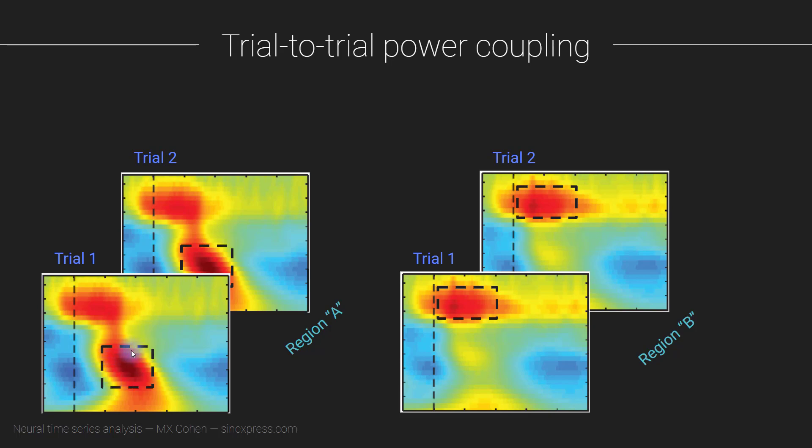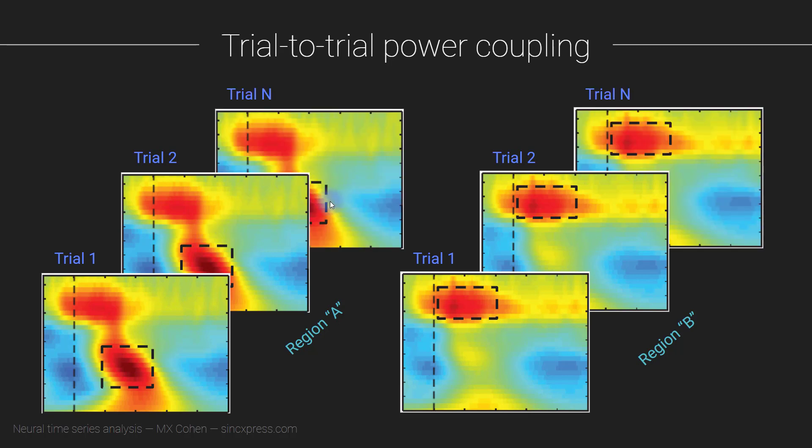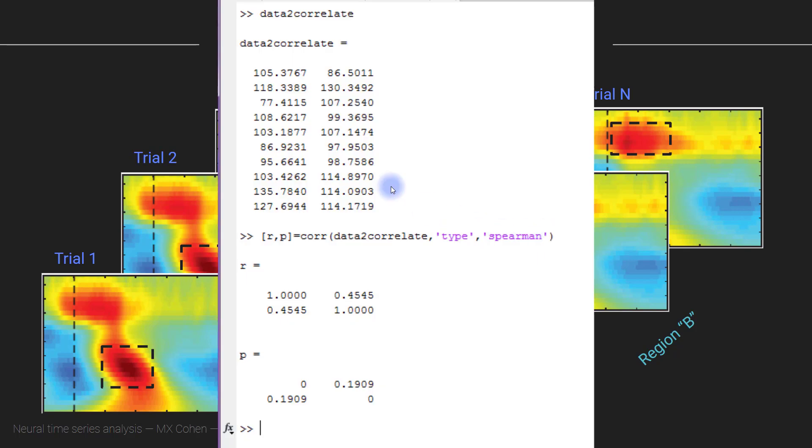So for trial one in this time-frequency window, you average all of these pixels together—so you average all of the time-frequency power points in this window here, and then that window is the same for every trial here up to N trials. And here in region B or electrode B you do the same basic idea. So you still average together all of the power values in this time-frequency window: trial one, trial two, up to trial N.